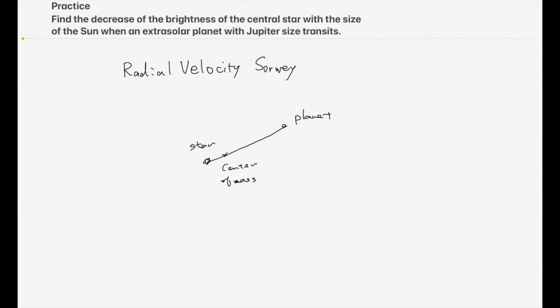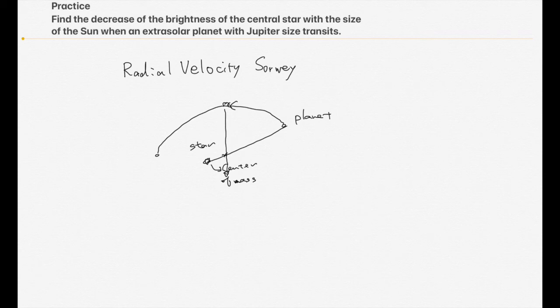So if the planet is moving to these positions, the star is moving to new positions here. And if the planet is rotating to these new positions, the star is coming to this position.